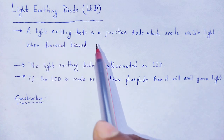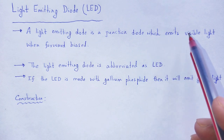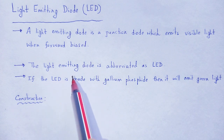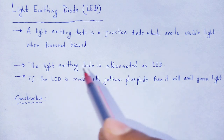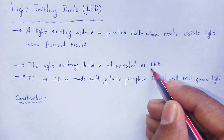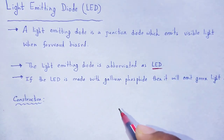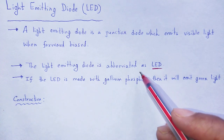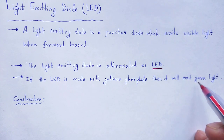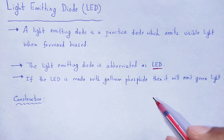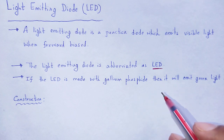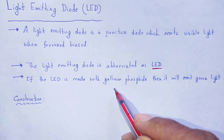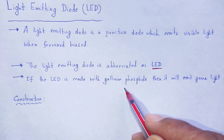Light emitting diode is a junction diode which emits visible light when it is forward biased. In abbreviated form, the light emitting diode is called LED. If the LED is made with gallium phosphide, then it will emit green light. In this way, different varieties of colourful light can be produced by using different combinations of elements.